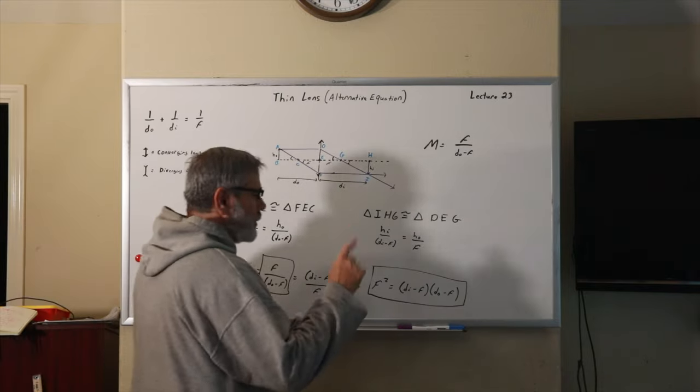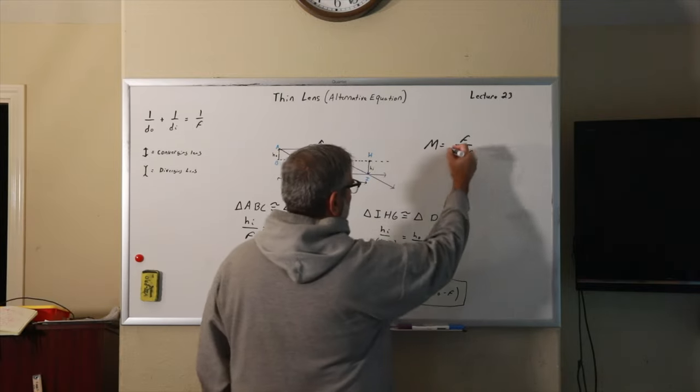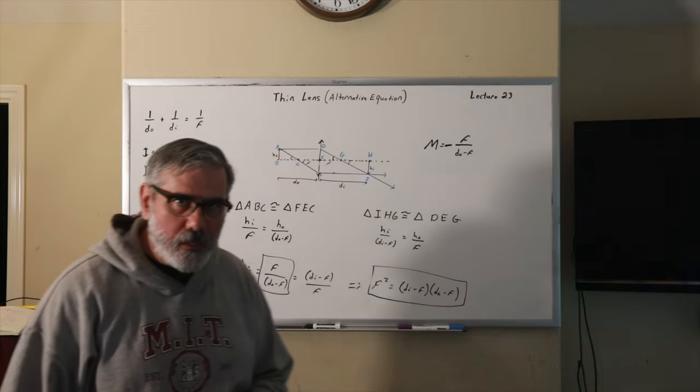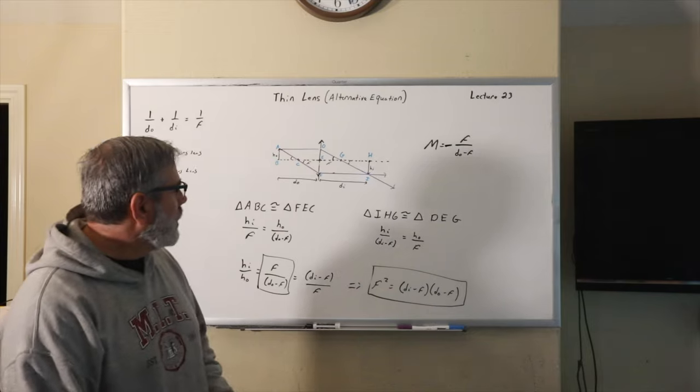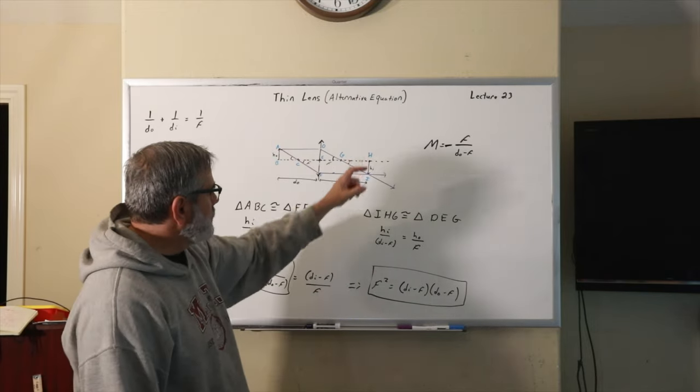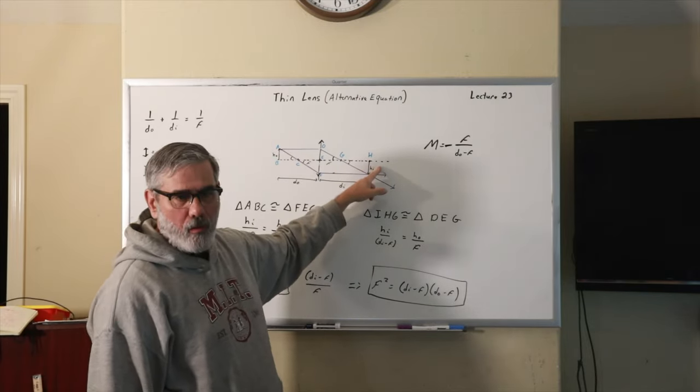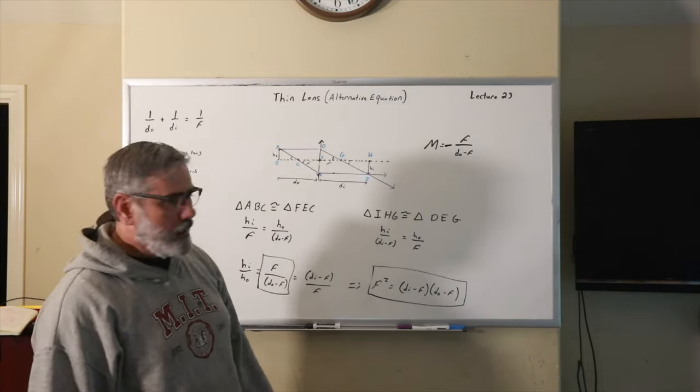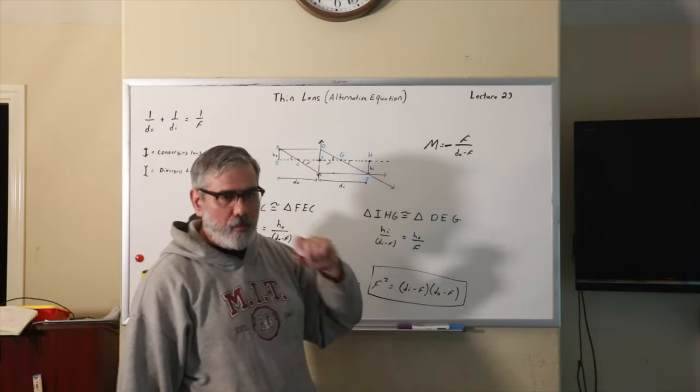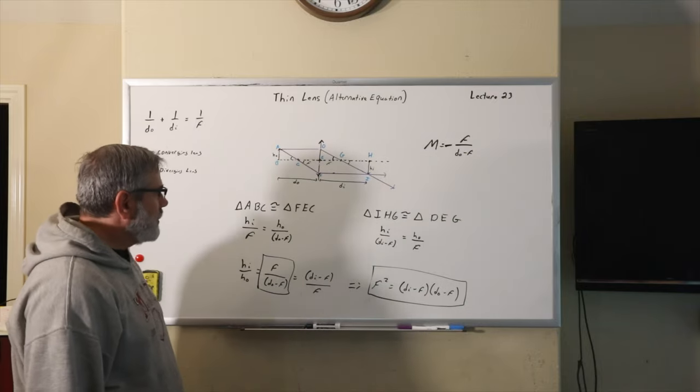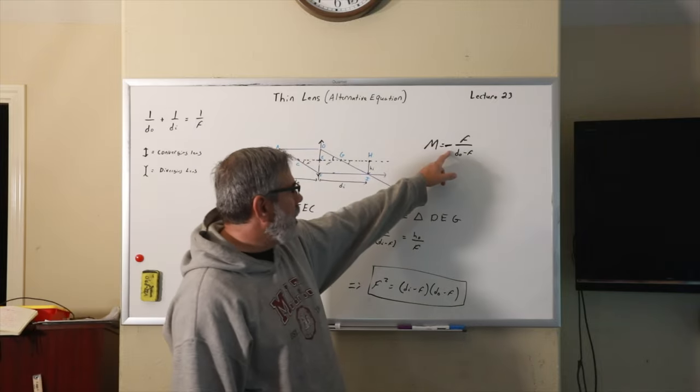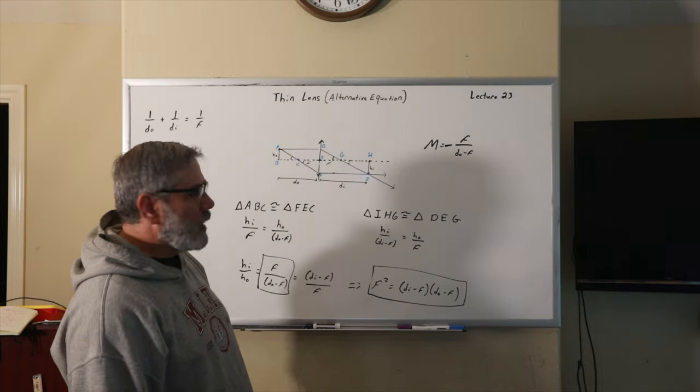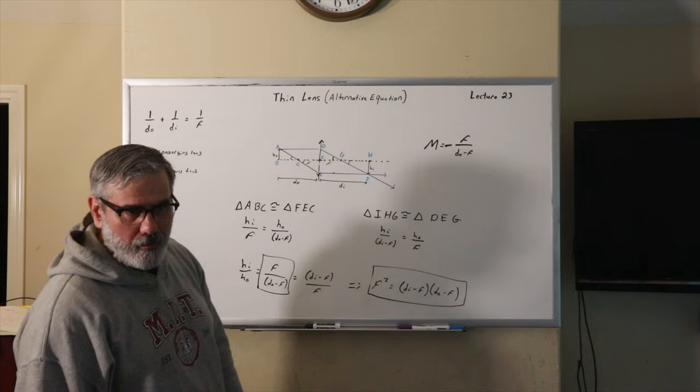And there's one other adjustment that I need to make here. I need to add a negative sign here. And the reason I put the negative sign there is there's a sign convention that says that if the image is inverted and real, then the sign of it will be negative. And so we put this negative sign in here so that we have that convention. If it's a positive, if the magnification is positive, it will be virtual and non-inverted.